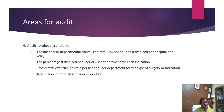Audits related to blood transfusion include the hospital or departmental transfusion rate — that is, number of units transfused per hospital per year — the percentage transfused per year or per user department for each indication, crossmatch-to-transfusion ratio per user or department for the type of surgery or indication, and the transfusion index or transfusion proportion.